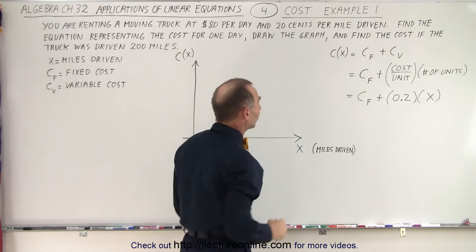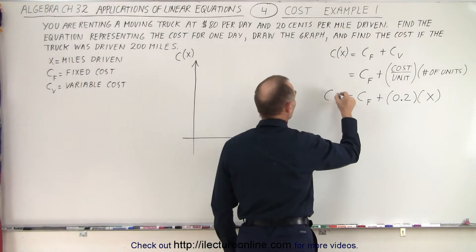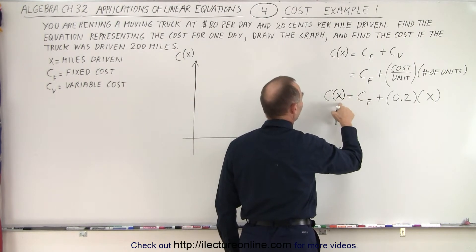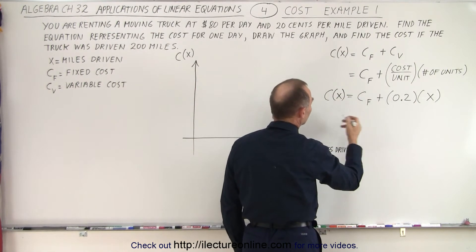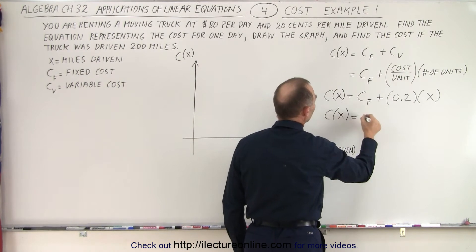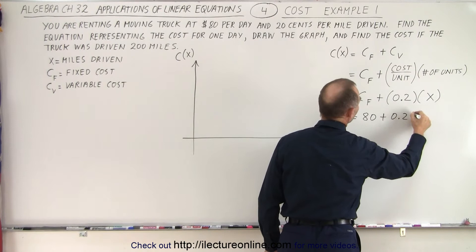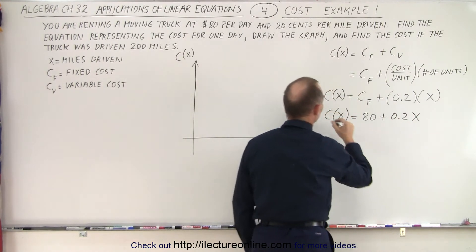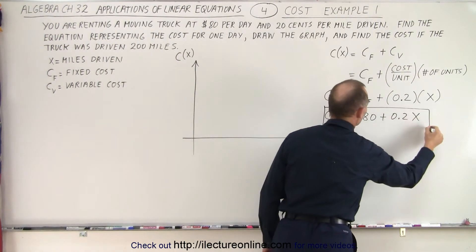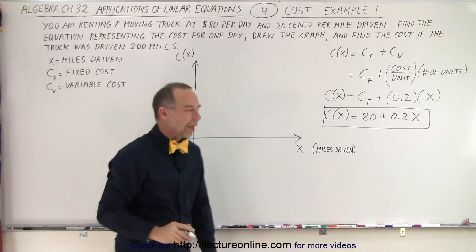The fixed cost is just a single number. And that's going to be equal to the total cost. C is a function of x. And now when we write in the equation, C is a function of x, it's going to be equal to 80 for the fixed cost plus 0.2 times x for the variable cost. And this is the equation representing the total cost for this particular example.